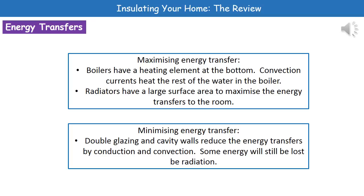which is going to heat the rest of the water in the boiler. The water that comes into contact with the heating element gets heated up, it becomes less dense, it rises, and then it will transfer that heat energy to surrounding particles. So, that convection current sets up and that means we heat the boiler efficiently.